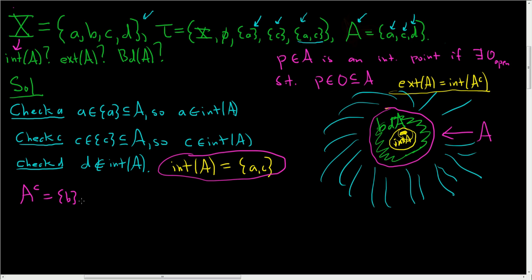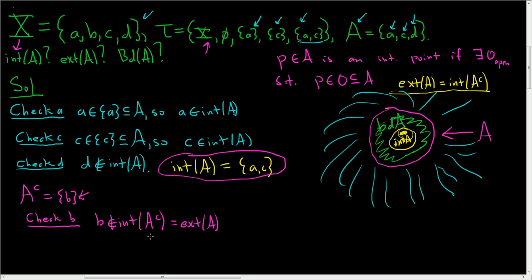Now we have to find the interior of the complement set {b}. We check little b and see if it's an interior point: we have to find an open set containing little b. The only open set containing little b is capital X, but capital X is not contained in this set. So little b is not an interior point. The interior of the complement is the exterior of A, so the exterior of A is the empty set.